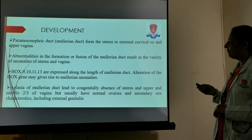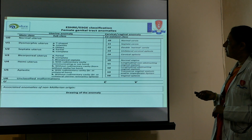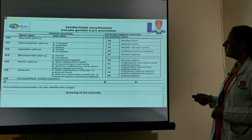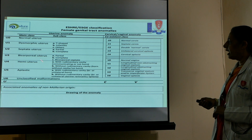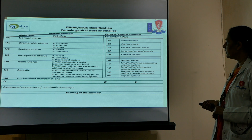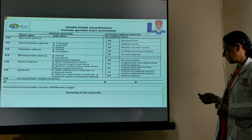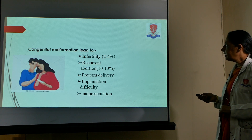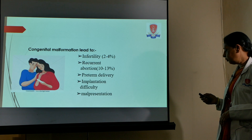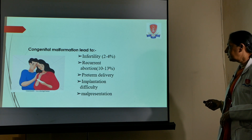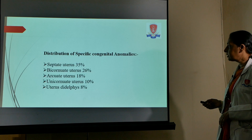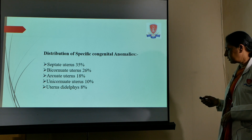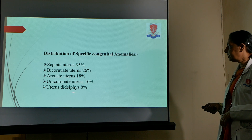This slide shows the normal embryological development of the uterus and classification of genital tract abnormalities, including the dysmorphic uterus, septate uterus, bicorporeal uterus, hemi-uterus, and aplastic uterus, classified also according to the cervix. Congenital anomalies can lead to infertility in 2 to 4 percent, recurrent abortions in 10 to 13 percent, preterm delivery, implantation difficulty, and malpresentations. The distribution of specific congenital anomalies includes septate uterus, bicornuate, arcuate, unicornuate, and didelphys.